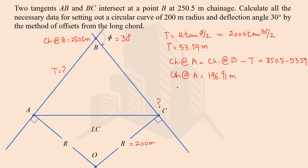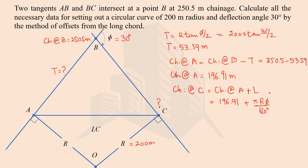The chainage at point C is calculated by adding the chainage at point A to the length of the curve. Using the formula L = πRφ/180, with R = 200 and φ = 30 degrees, the length of the curve is approximately 104.67 meters. Therefore, the chainage at point C is 196.91 + 104.67 = 301.57 meters.